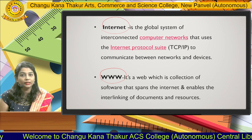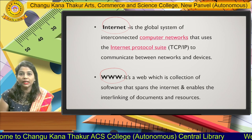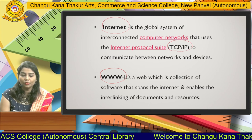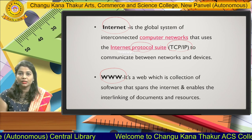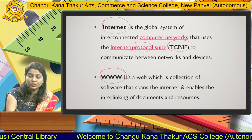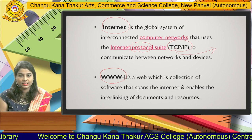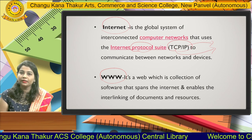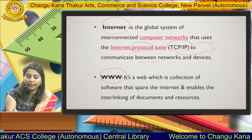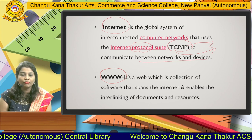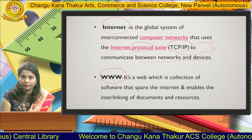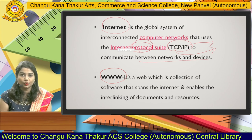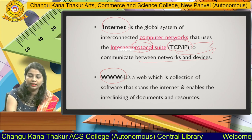The internet is a global system of interconnected computer networks that uses the internet protocol. Which protocols? TCP and IP protocols. A protocol is nothing but a set of rules which have to be followed. To access the internet, you follow TCP and TCP/IP protocol. TCP stands for Transmission Control Protocol, and IP stands for Internet Protocol, used to communicate between networks and devices.